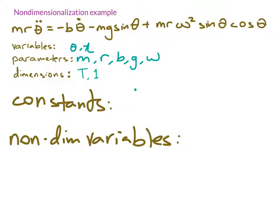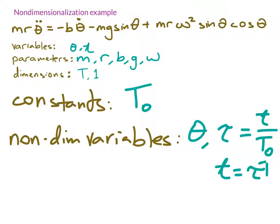Now I introduce my nondimensionalizing constant T₀. I'll choose the value of that later. And I introduce my nondimensional variable. Theta is already nondimensional, so I'll leave that alone. And then I introduce tau, which is my variable t divided by the constant T₀. And I reorganize that as t equals tau T₀.